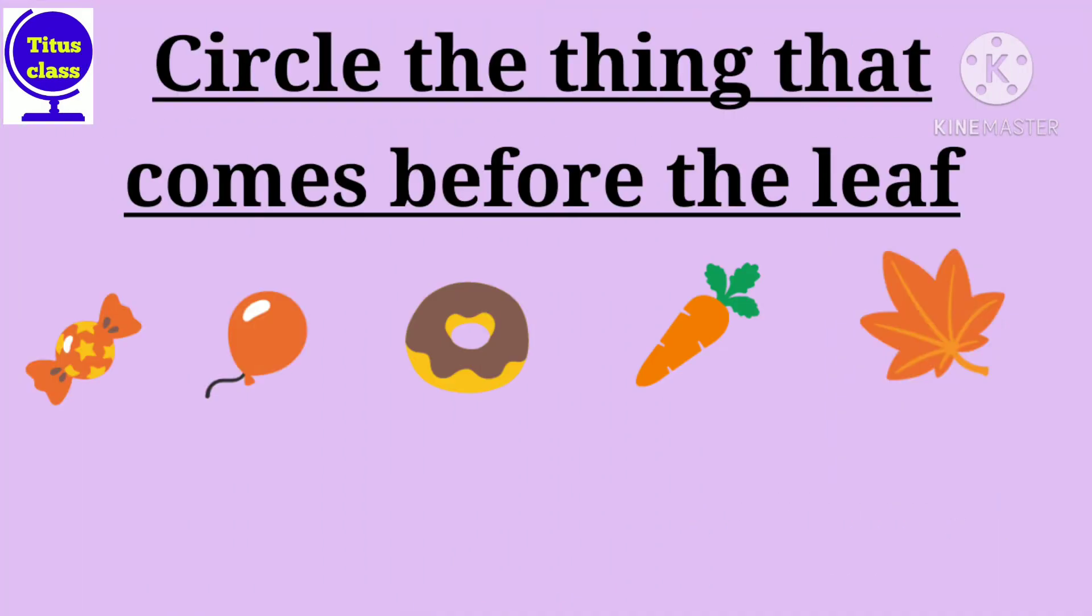Next question is, circle the thing that comes before the leaf. Which thing? Yes, it's carrot. Very good.